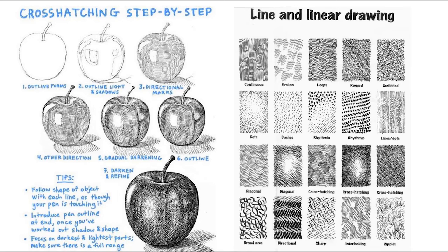On the left is a step-by-step guide of how you would add cross-hatching to an object. First, start with a light outline and think about where you want the light areas to be. In step three, the directional marks - if you look at the lines, they're following the shape of the apple, they're curved. It would look odd if you used very straight lines on a sphere, so ensure your cross-hatching lines follow the shape of the object.